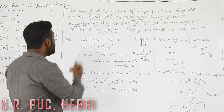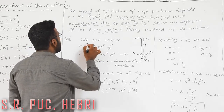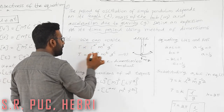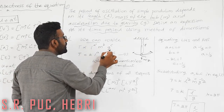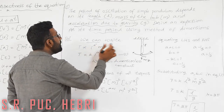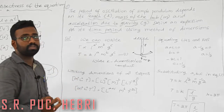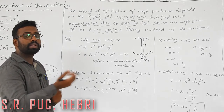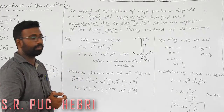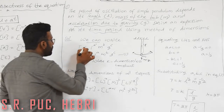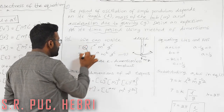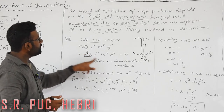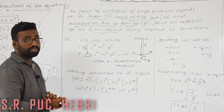We write T ∝ lᵃ mᵇ gᶜ, where a, b, c are constants to be found. Replacing proportionality with equality and a dimensionless constant k: T = k lᵃ mᵇ gᶜ — this is equation 1. Now we substitute dimensional formulas. T on the left is M⁰ L⁰ T¹. On the right: l is Lᵃ, m is Mᵇ, and g (acceleration) is L T⁻² raised to power c.